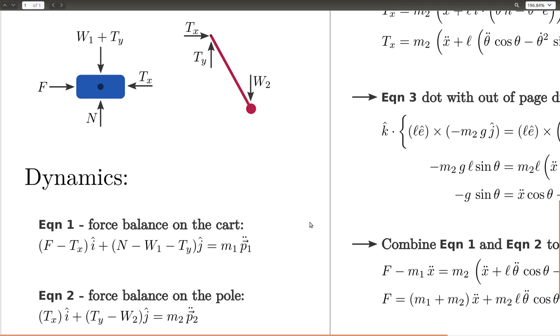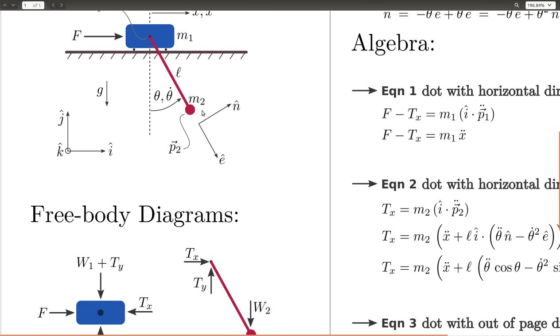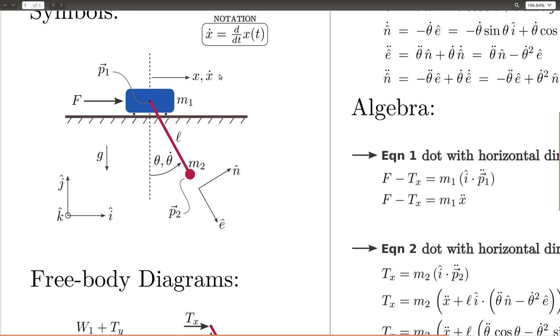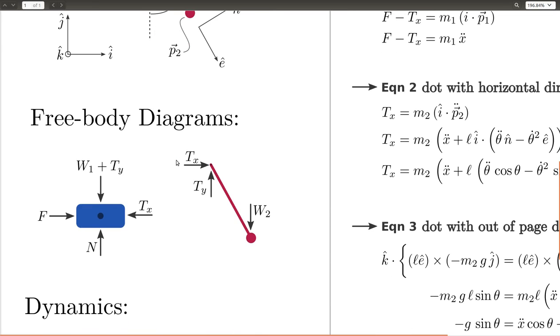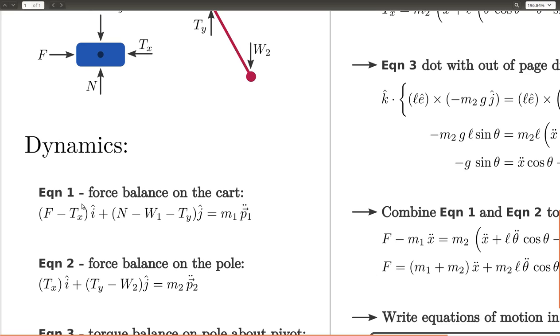Now you might think that we're done at this point, but it's always good to check and see how many unknowns you have and how many equations you have. So here, we actually have three unknown forces, the normal force and the two components of the tension force. And we also have two unknown accelerations, x double dot and theta double dot. That gives us five unknowns, and this equation is in two dimensions, and this equation is in two dimensions. So that's four equations. It turns out that forces and accelerations, at least for simple problems like this, will enter linearly. So if we want to solve for five unknowns, we're going to need five equations.